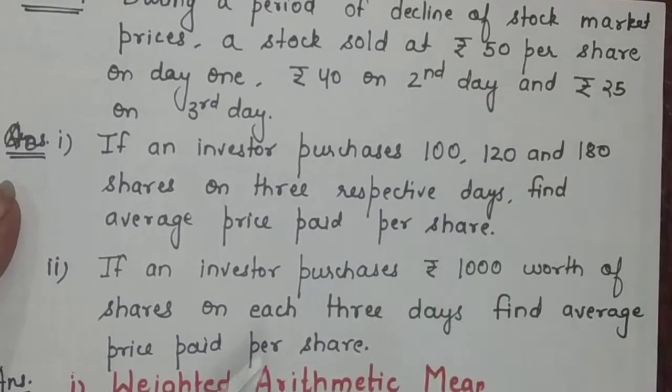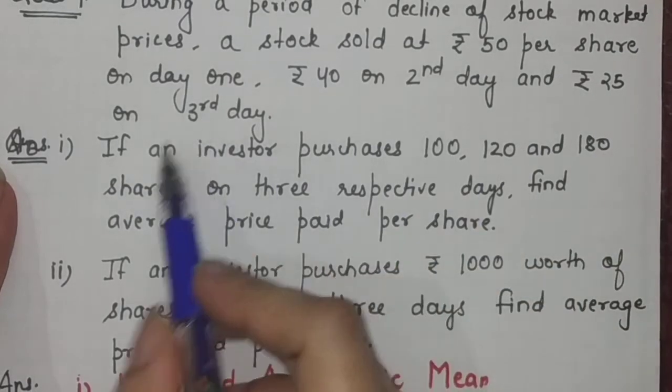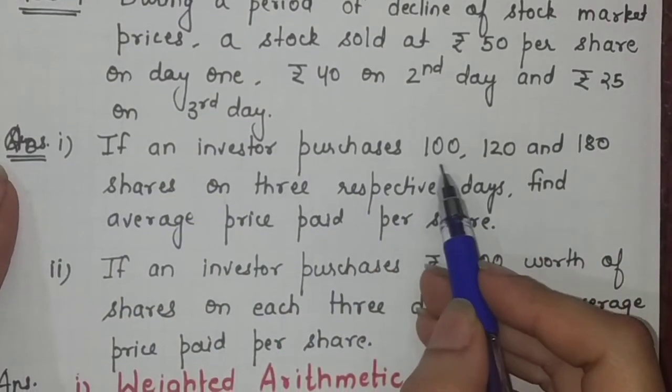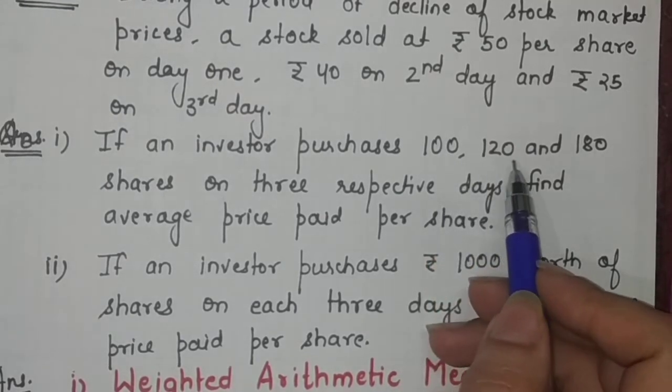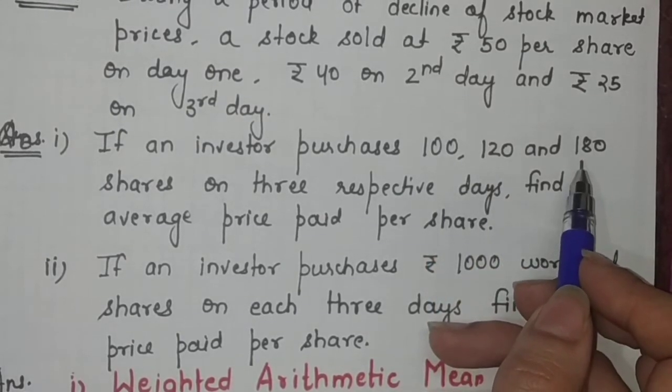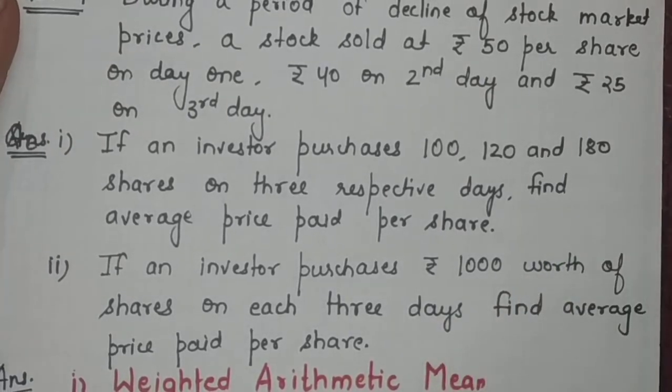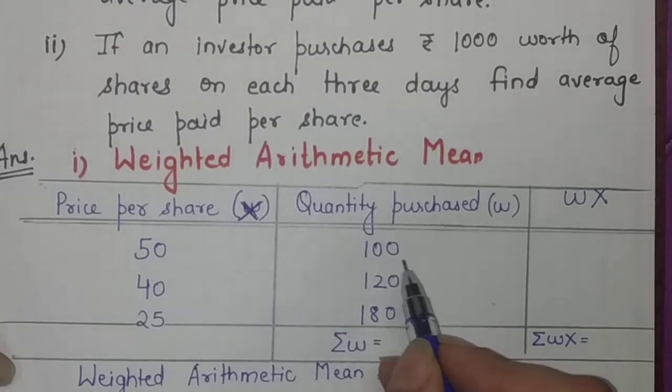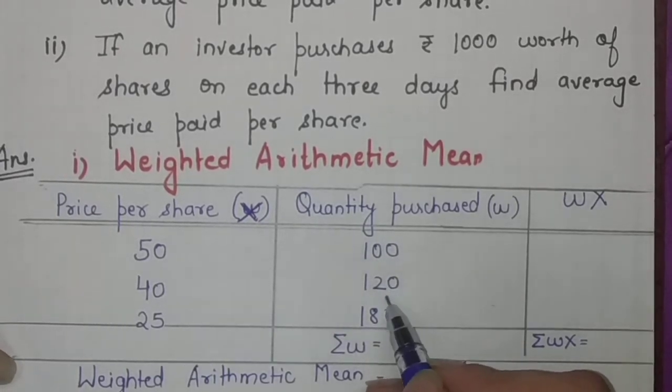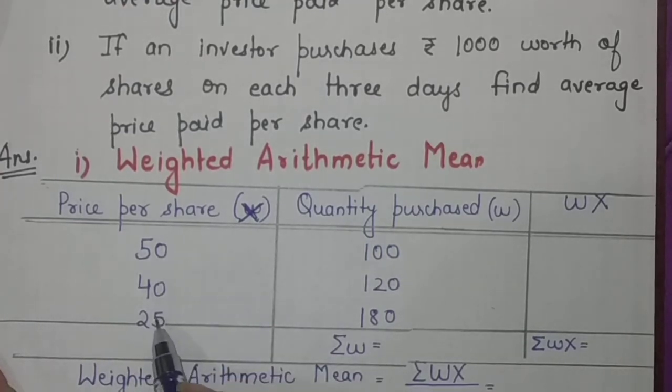During a period of decline of stock market prices, one stock's price was 50 per share the first day, 40 per share the second day, and 25 per share the third day. One investor bought shares for three days: first day 100 shares, second day 120 shares, and third day 180 shares. This is a clear cut case of weighted arithmetic mean, where the price per share is X and the quantity is W: 100 on the first day, 120 on the second day, and 180 on the third day.